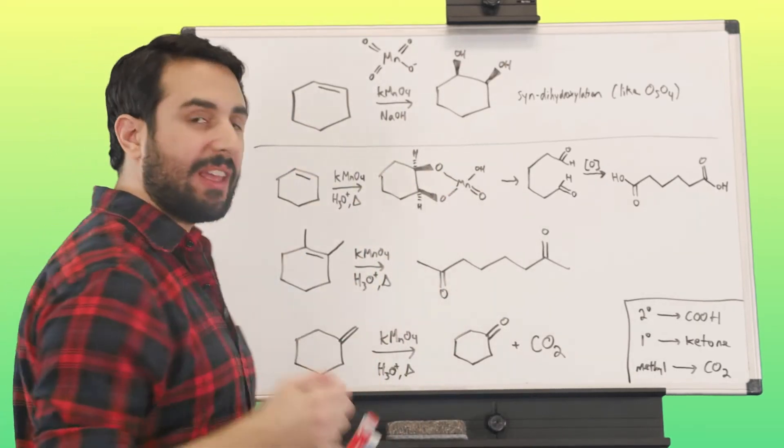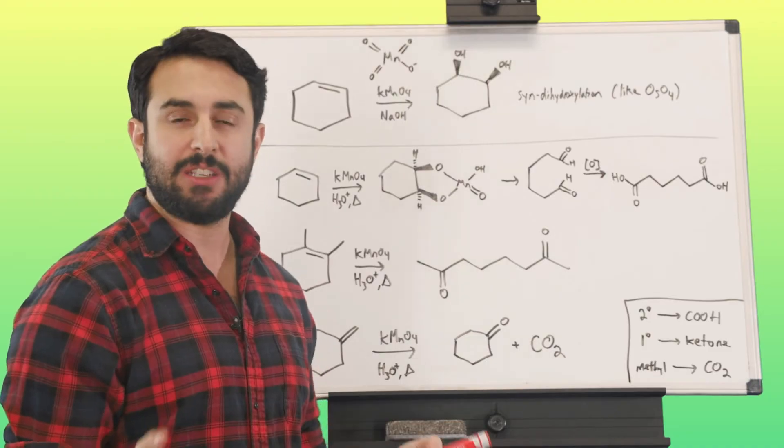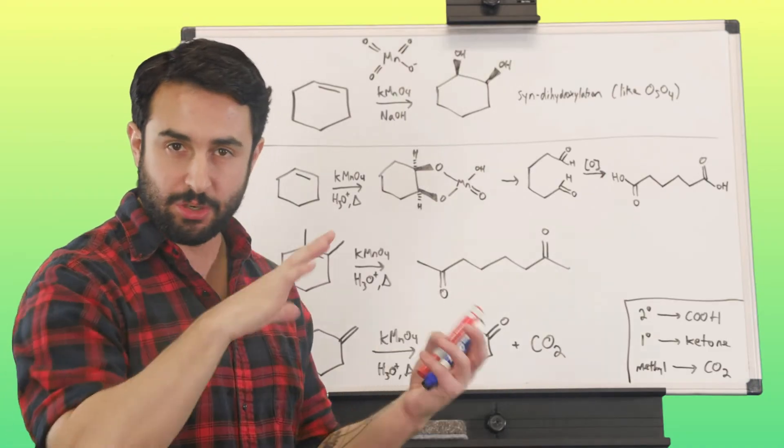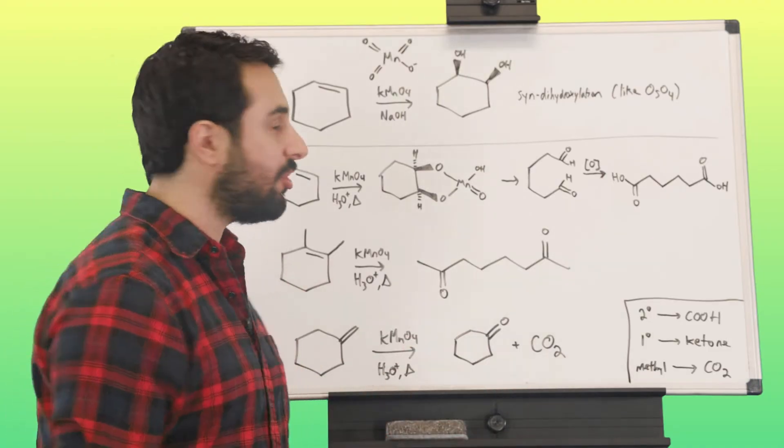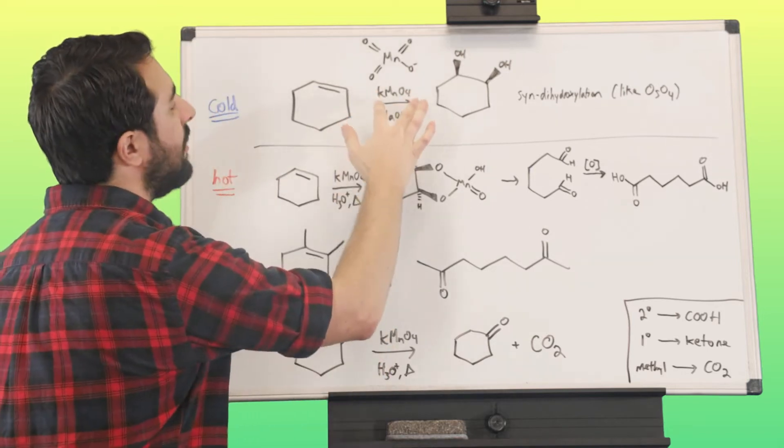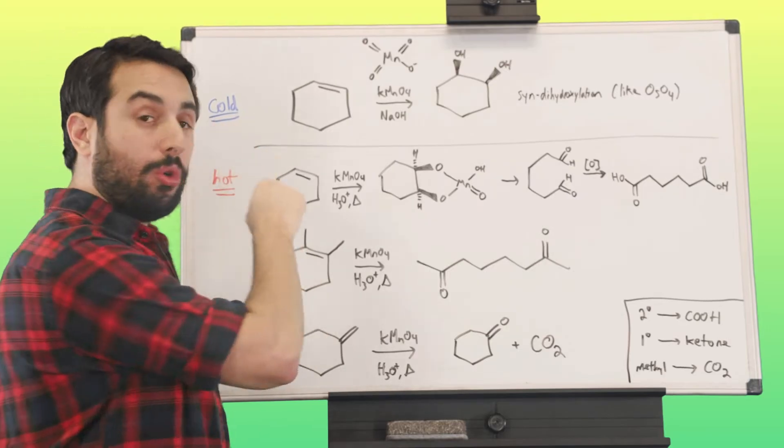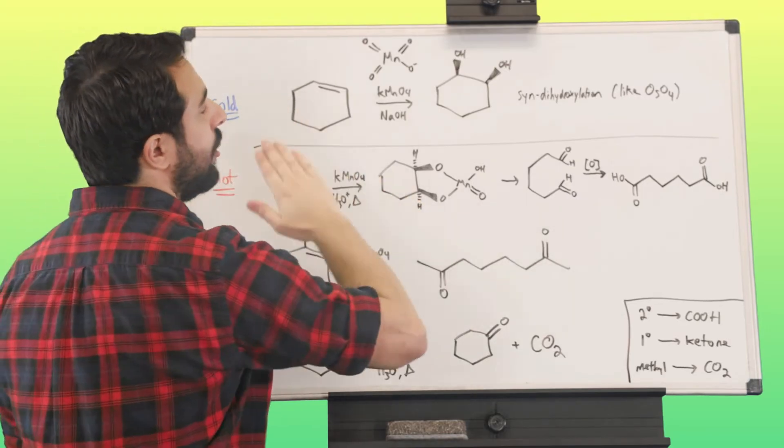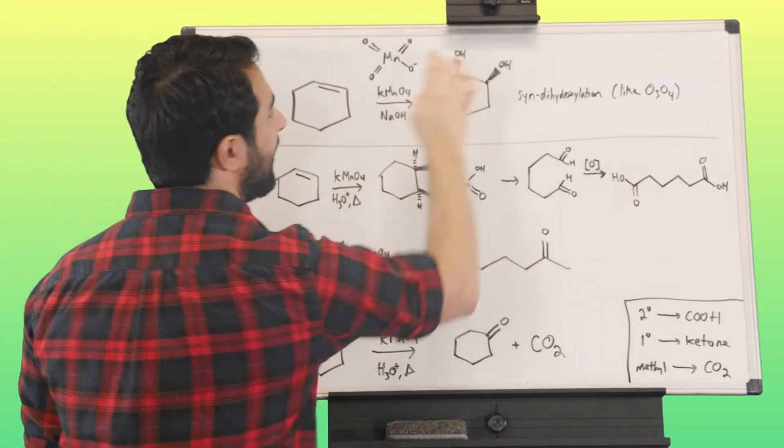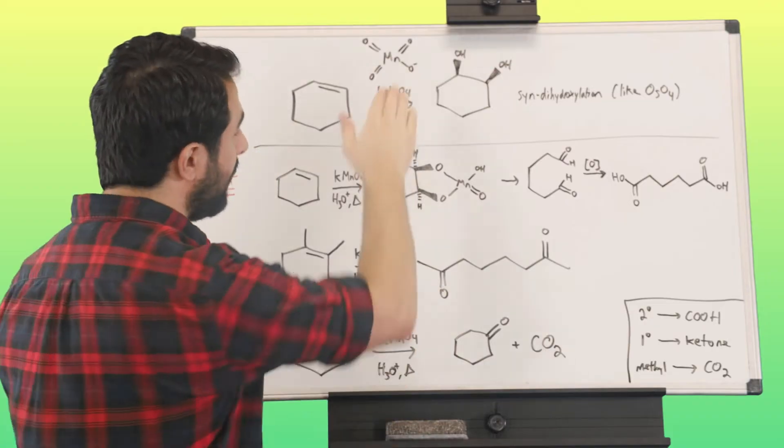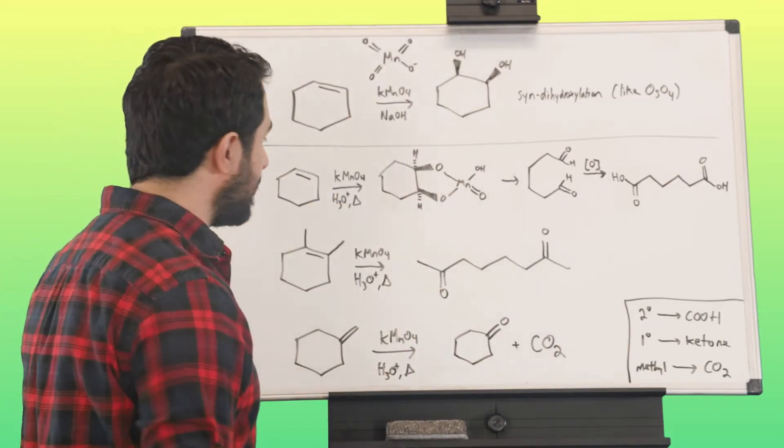So just remember, if you're making flashcards, which I highly recommend if you're trying to memorize what certain conditions do, what kind of transformations they promote, when you see potassium permanganate operating on an alkene, if conditions are cold, very important, that's going to be a syn dihydroxylation. You're going to get that vicinal diol.